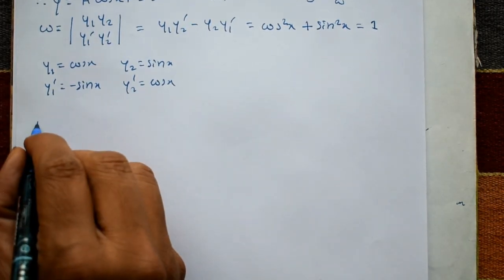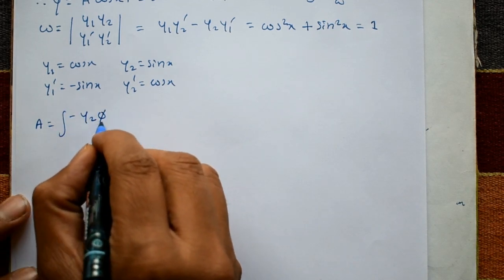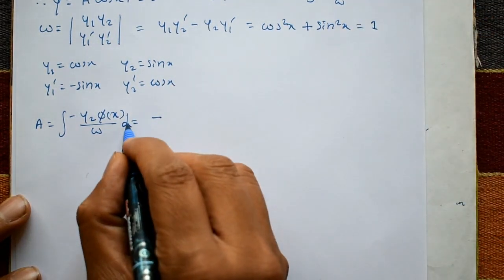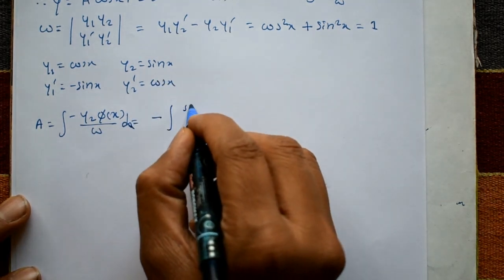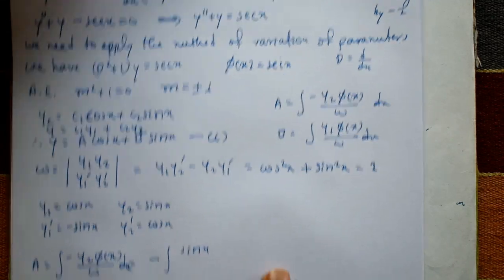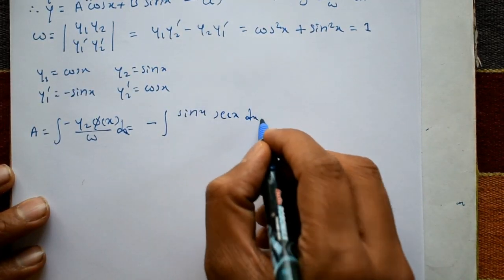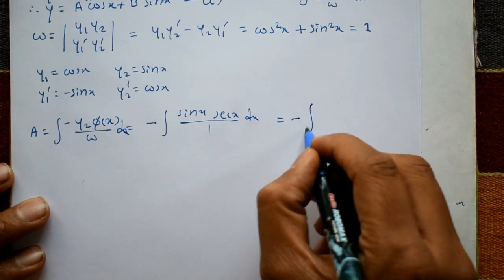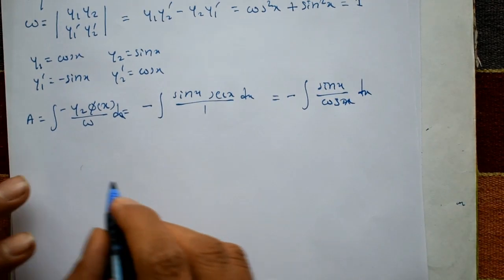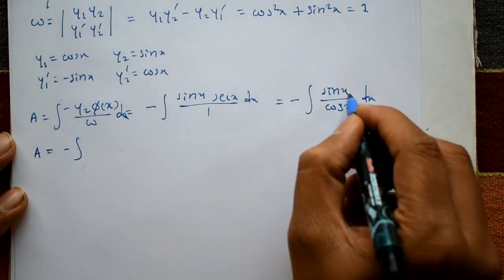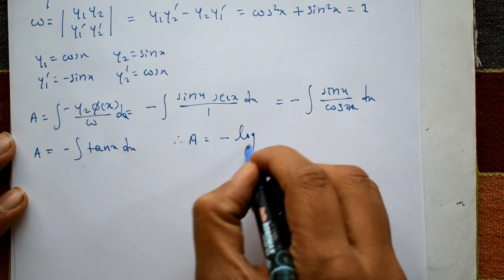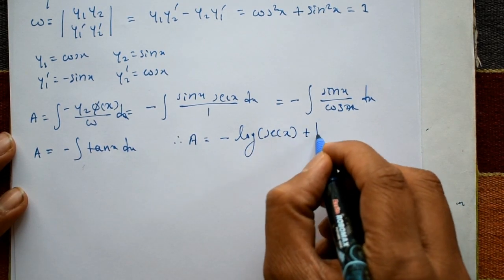Now computing a: a = -∫(y2·φ(x)/W)dx = -∫(sin(x)·sec(x)/1)dx = -∫(sin(x)/cos(x))dx = -∫tan(x)dx. Therefore a = -log|sec(x)| + k1.